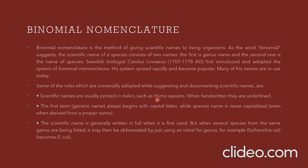Rules for writing scientific names: scientific names are usually printed in italics — such as Homo sapiens. If handwritten, they are underlined. The first letter of the genus name is always written in capital, while the remaining letters are small. The species name is never capitalized, even when derived from a proper name.